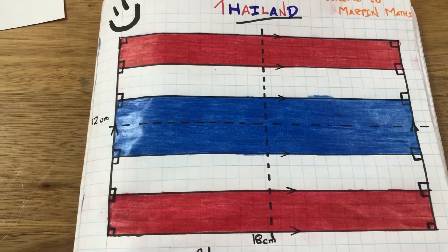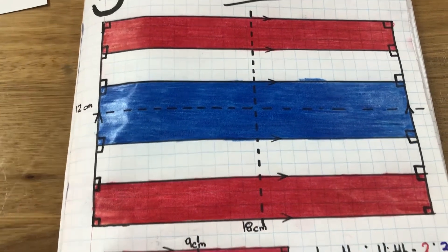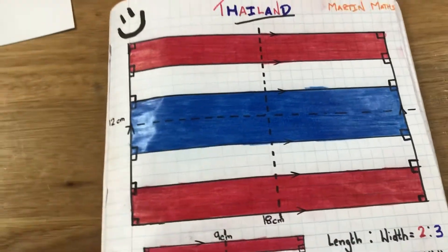So 36 plus 24 is 60. Okay, brilliant. So you've got the perimeter. 12, 18 makes 30. Double that, you get 60. So there we go.